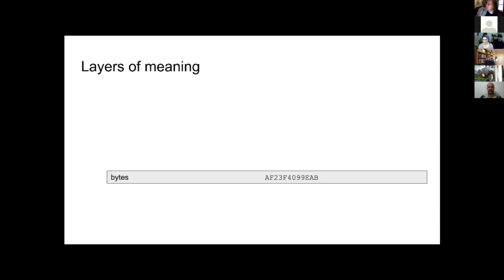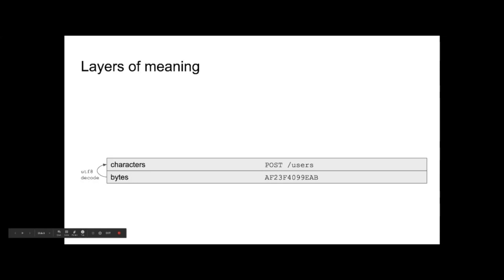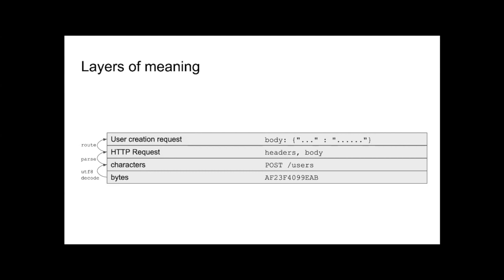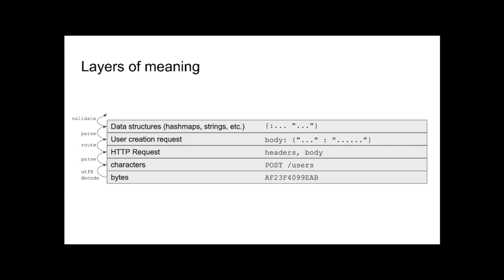The first step is to parse or decode the bytes as UTF-8, turning them into characters — that's one level of interpretation. Then we parse the HTTP request, giving us headers and a body. We do what's called routing, and it turns out this is a POST to /users — a user creation request. The body has JSON, which is just text, so we parse that for another level of interpretation, giving us data structures. Then we validate — confirming we have a user creation request record.